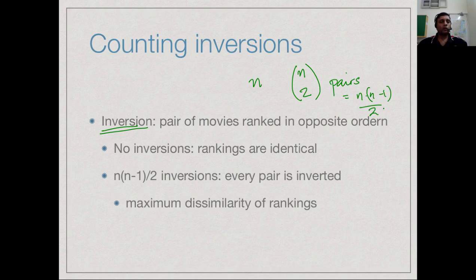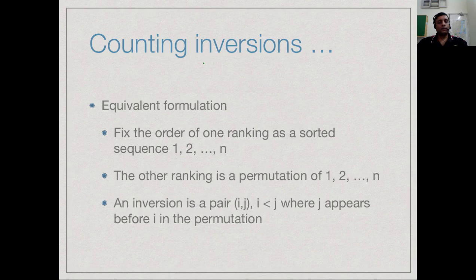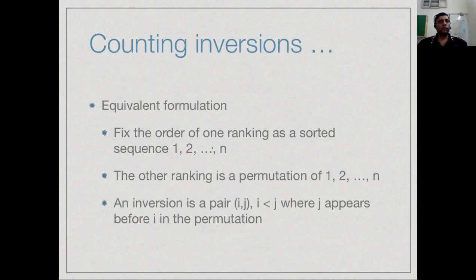We can reformulate this: take your ranking as the given order 1 to n. Your friend's ranking would assign different ranks — everything you rank as i will be ranked as some j by your friend. The friend's ranking is a permutation of 1 to n. An inversion is a pair (i, j) where i is smaller than j — so i is ahead of j in the original list — but in the friend's permutation j appears before i.